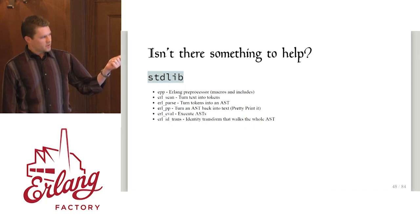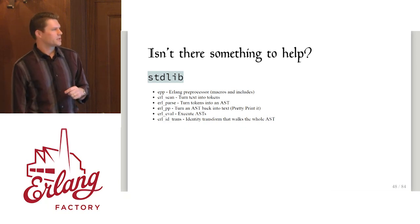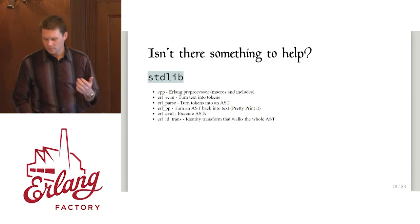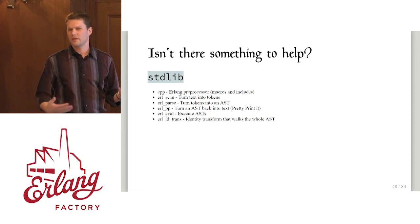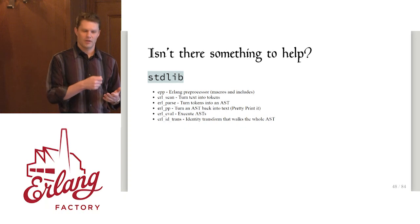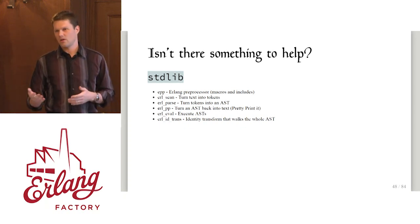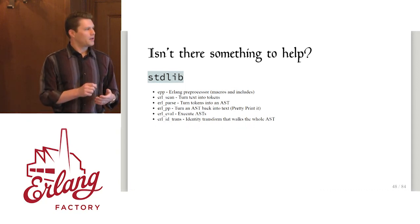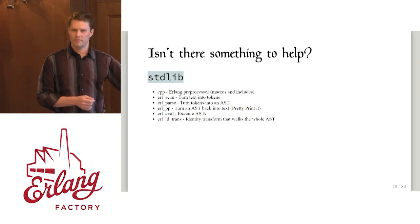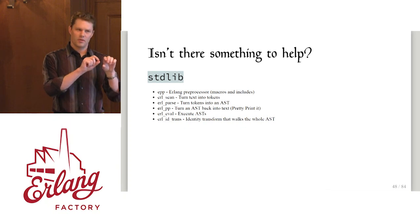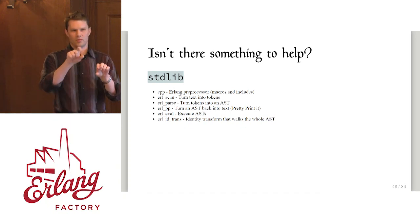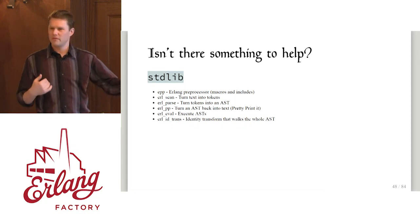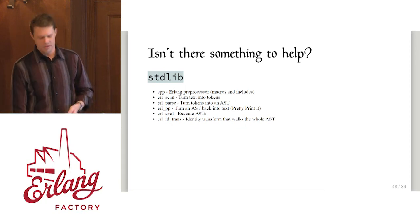The erl identity transform will walk the whole tree and return it verbatim. You can see where to add a new clause that matches your specific ets:insert call. But it's incredibly verbose, especially if you just want to pick one thing out of a syntax tree and transform it. There's another application — part of the standard distribution — called syntax_tools. This is the next higher level of working with syntax trees than stdlib. Unfortunately it uses a different syntax tree than stdlib, but there are functions to convert back to stdlib format.